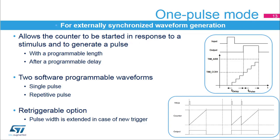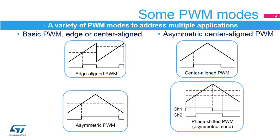One pulse mode also offers a re-triggerable option. A new trigger arriving before the end of the pulse will cause the counter to be reset and the pulse width to be extended accordingly. The standard edge aligned PWM mode is programmed with the auto reload register defining the period and the compare register defining the duty cycle, the counter being in up only or down only counting mode. A single timer can generate up to four PWM signals with independent duty cycles and identical frequency. When multiple PWM waveforms are generated by the same counter, all falling edges occur at the same time, hence the term edge aligned.